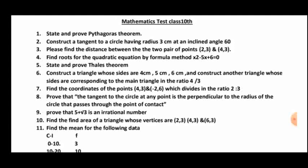The next question: construct a tangent to a circle having a radius of 3 cm at an inclined angle of 60 degrees. It is an important question, but not only this exact question — under construction of tangents there will be some more types of questions. Practice all constructions of tangents, and especially this one. Tangent construction is for 2 marks.